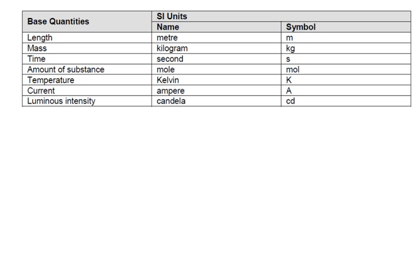Now, all units can be built from these baseline quantities. So, for example, the Newton, which is a force, so F equals MA, where M is mass in kilograms, A is acceleration, which is meters per second squared.